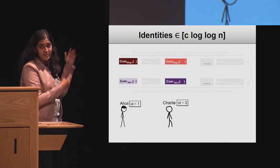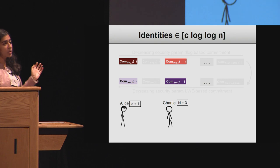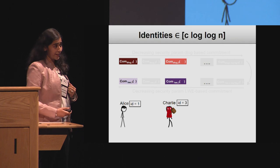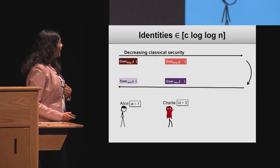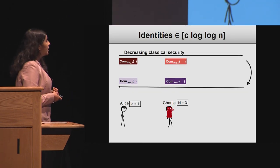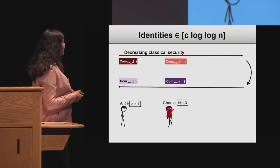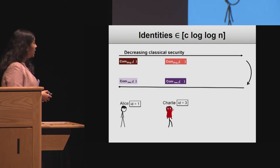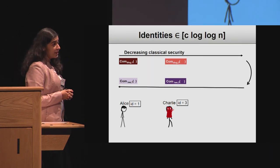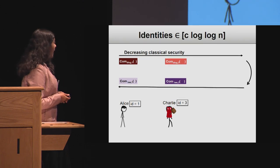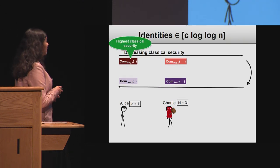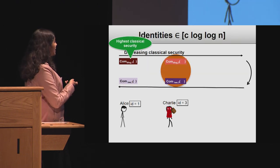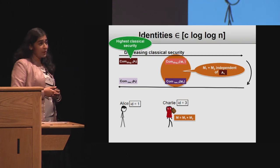The reason is that these commitments are arranged in order of decreasing classical security, which means the commitment on the top left of the slide is the most secure one. The value committed by Alice using the top-left commitment is secure even in the time sufficient to extract both shares of Charlie's commitment. This means Charlie's values M1 and M2 are jointly independent of one of the shares of Alice's commitment, which in turn means that the message M committed by Charlie is independent of the message A committed by Alice.